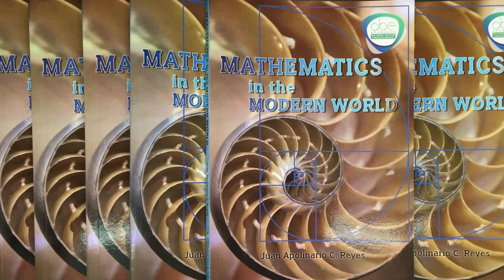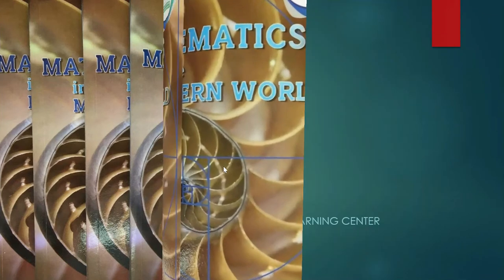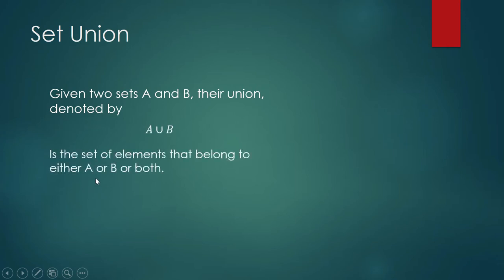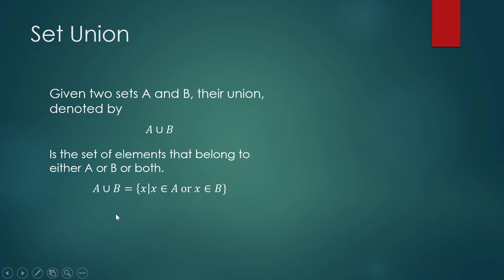We are still with set operations. Last time we spoke about set intersection; in this video we shall speak about set union. Given two sets A and B, their union — denoted by this symbol — is the set of elements that belong to either A or B, or both. In math language: A union B equals the set of x such that x is an element of A or x is an element of B. Pay attention to the connective: when the operation is union, the connective is 'or'; when the operation is intersection, the connective is 'and'.